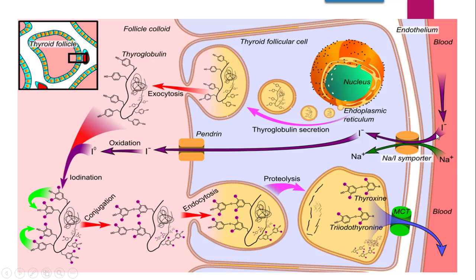Simultaneously, the second process begins. On the cell surface, sodium-iodide symporters are located. These sodium-iodide symporters actively transport iodide (I⁻) into the cell. This iodide enters the cell and then enters the colloid in the lumen of the thyroid follicle through the transporter called pendrin. Through pendrin, the iodide enters the thyroid follicle lumen.